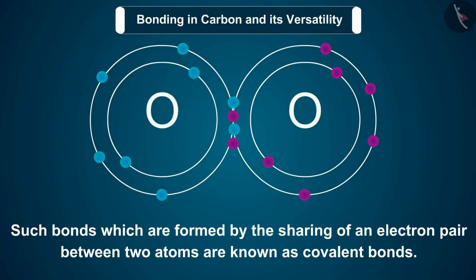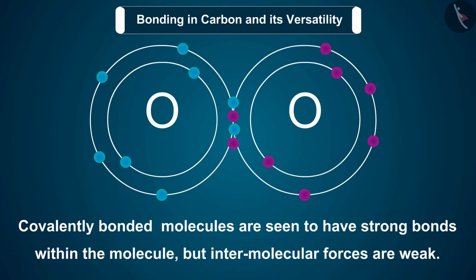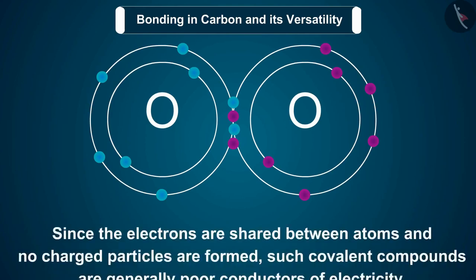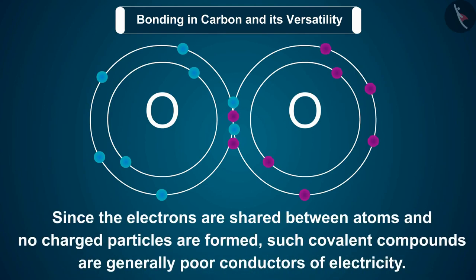Such bonds which are formed by the sharing of an electron pair between two atoms are known as covalent bonds. Covalently bonded molecules are seen to have strong bonds within the molecule, but intermolecular forces are weak. This gives rise to the low melting and boiling points of these compounds. Since the electrons are shared between atoms and no charged particles are formed, such covalent compounds are generally poor conductors of electricity.